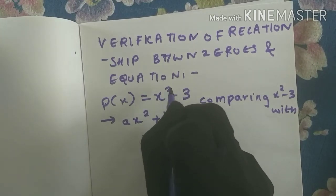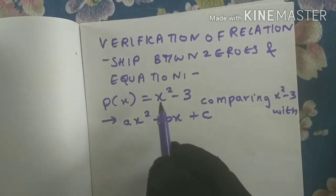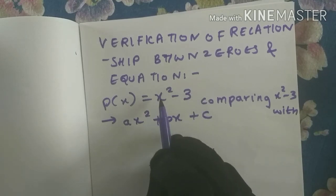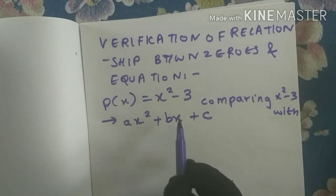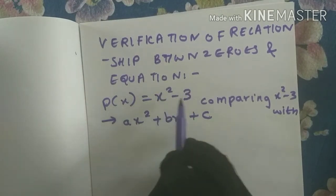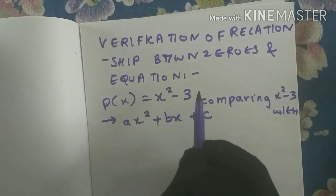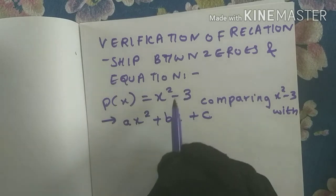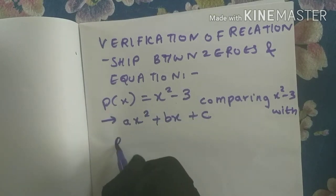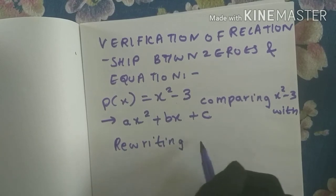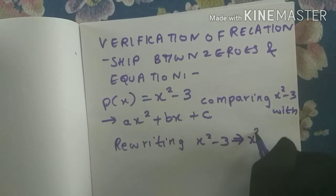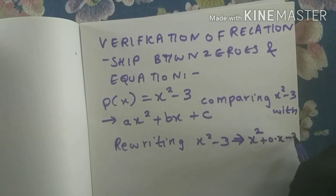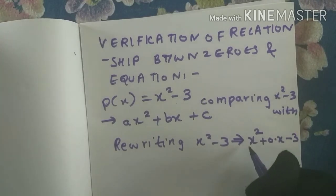Since the degree is 2, this is a quadratic polynomial, so I compare it with ax squared plus bx plus c. In x squared minus 3, I have an x squared term and a constant, but I do not have an x term. Since 0 multiplied by anything is 0, I can write the x term as 0 times x. So rewriting: x squared plus 0·x minus 3, which matches the form ax squared plus bx plus c.